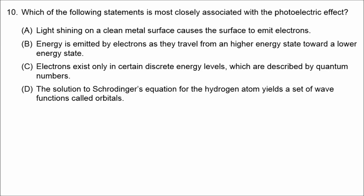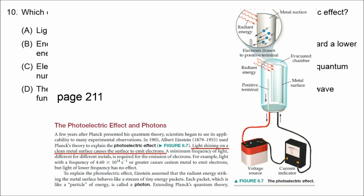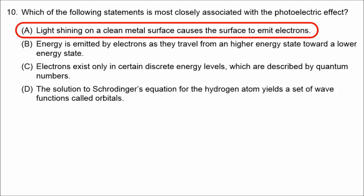Number 10 is about the photoelectric effect — we need to find which statement is most closely associated with that phenomenon. On page 211 in your book, it says that light shining on a clean metal surface causes the surface to emit electrons. Therefore the correct answer to number 10 is A.